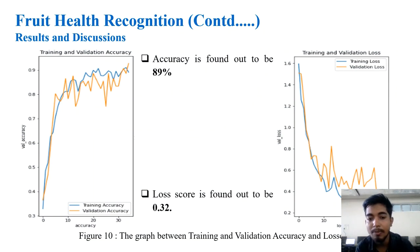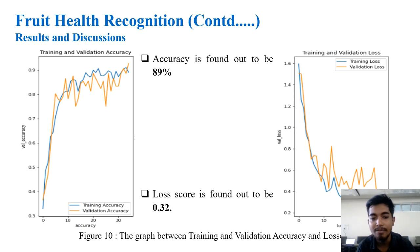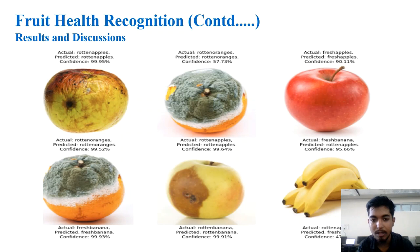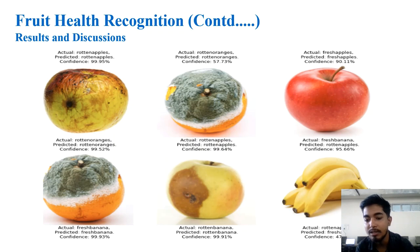The model achieved an accuracy of 89% and a loss of 0.32. The training and validation accuracy, as well as training and validation loss, are represented in graph form — the orange line depicts validation accuracy and loss, and the blue line depicts training accuracy and loss. In the test results, we uploaded six images; the first image of a rotten apple was correctly classified as rotten apple with a confidence of 99.95%.